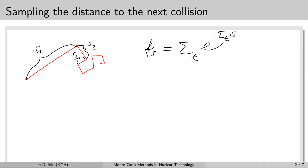The total macroscopic cross-section is a function dependent on two variables. One of the variables is the position. In principle, the total macroscopic cross-section may be changing along the flight of the neutron. For now let's assume that the total macroscopic cross-section does not change during the flight of the neutron until the next collision. Later we are going to remove this assumption and we will see how to sample the distance when the total macroscopic cross-section does change.